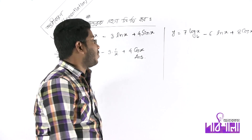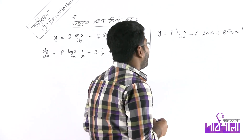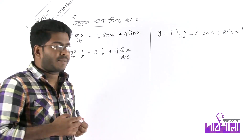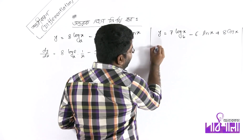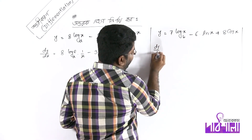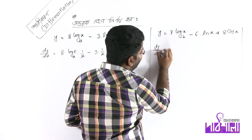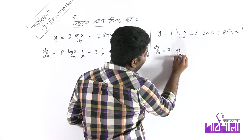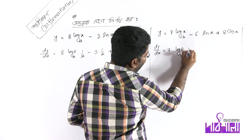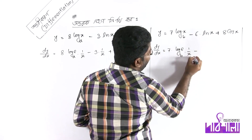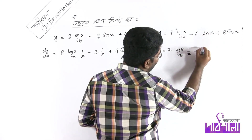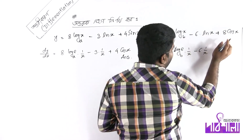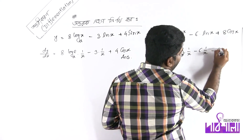Second example: y = 7·log_b(x) minus 6·ln(x) plus 8·cos(x). Differentiating: 7·log_b(x) gives 7·log_b(e)·(1/x). Minus 6·ln(x) differentiates to 1/x. And cos(x) differentiated gives minus sin(x).